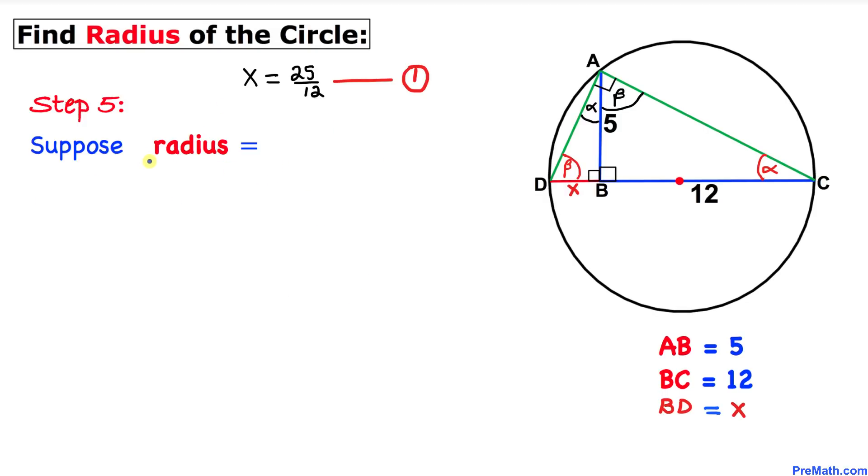Here's our next step: let's suppose that the radius of this circle is r. That means this radius is r and this radius is r as well. Let's also observe that this whole diameter CD is going to be the sum of this length X and this length 12. So that diameter is 12 plus X.